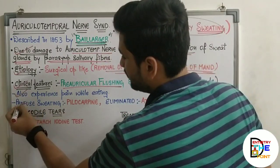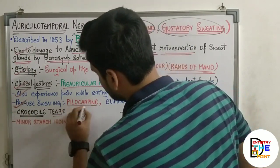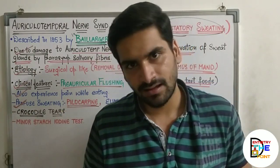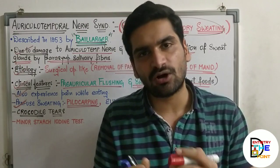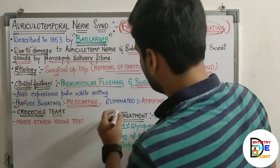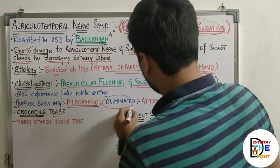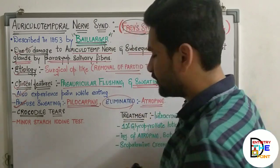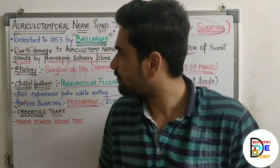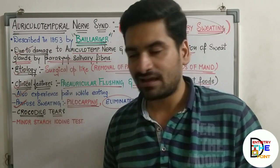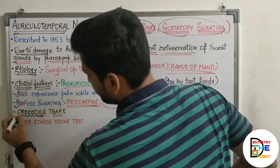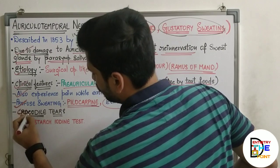Profuse sweating can be evoked by administration of pilocarpine in this patient. It can be eliminated by application of atropine, meaning atropine can be used in the treatment of this condition.